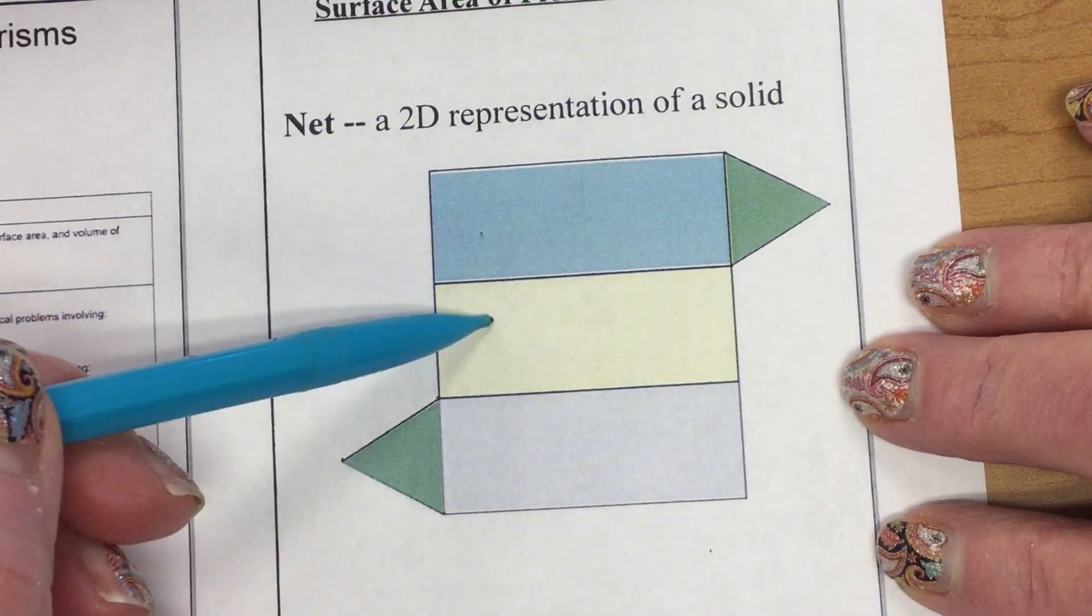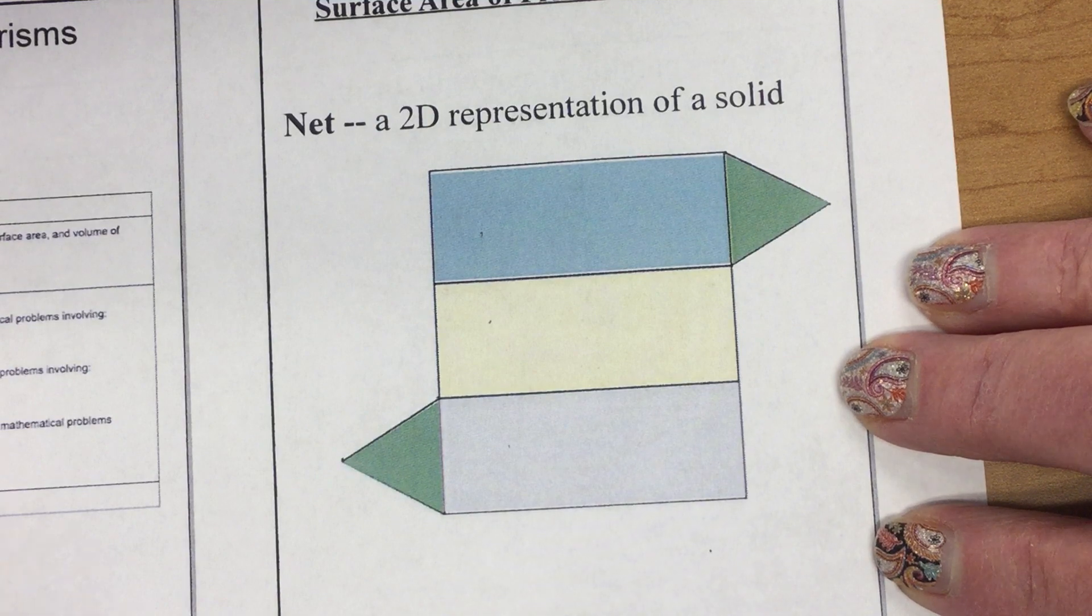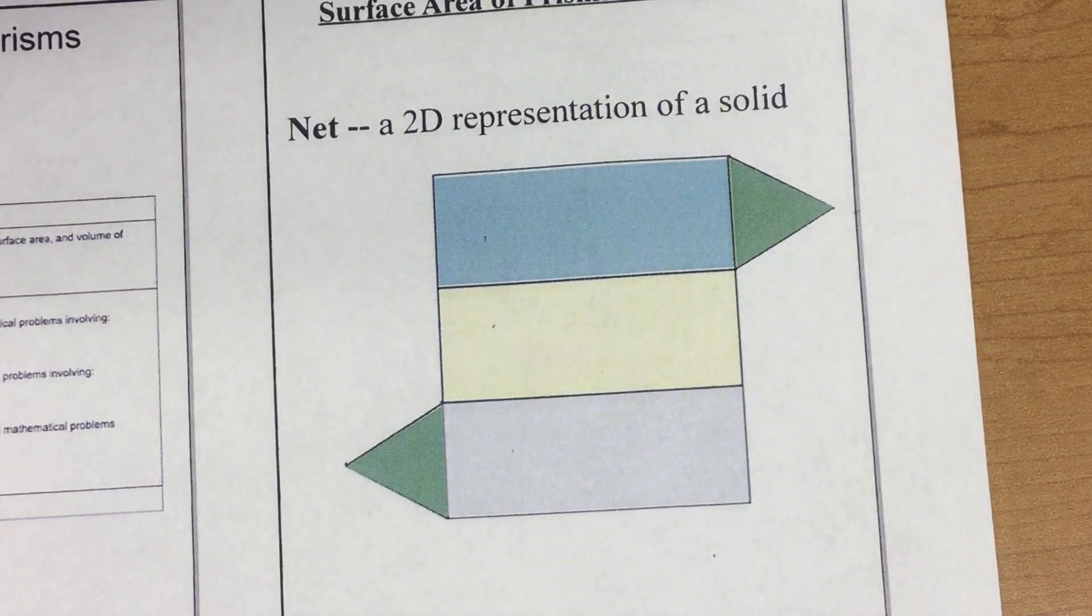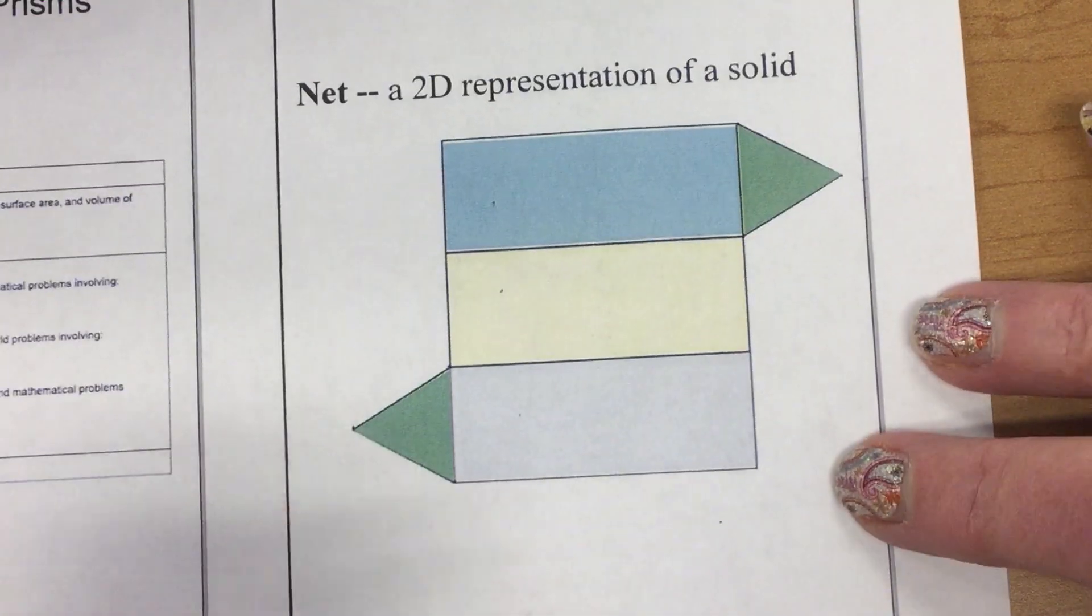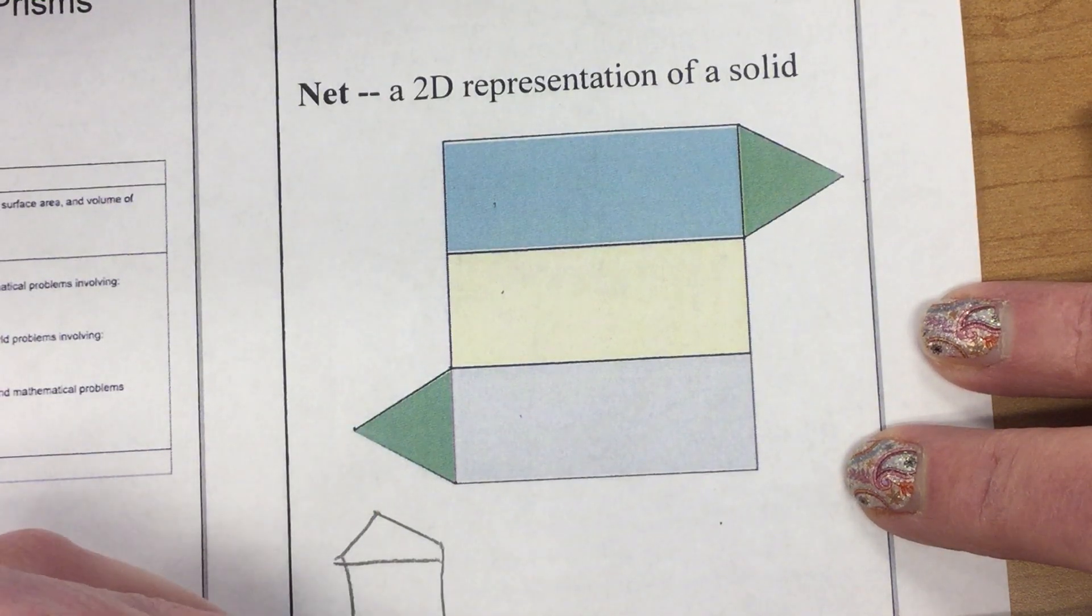Well, here I have three rectangular faces, and then I have two triangles, which tells me if I made this go back up again into a three-dimensional shape, I would get a triangular prism.